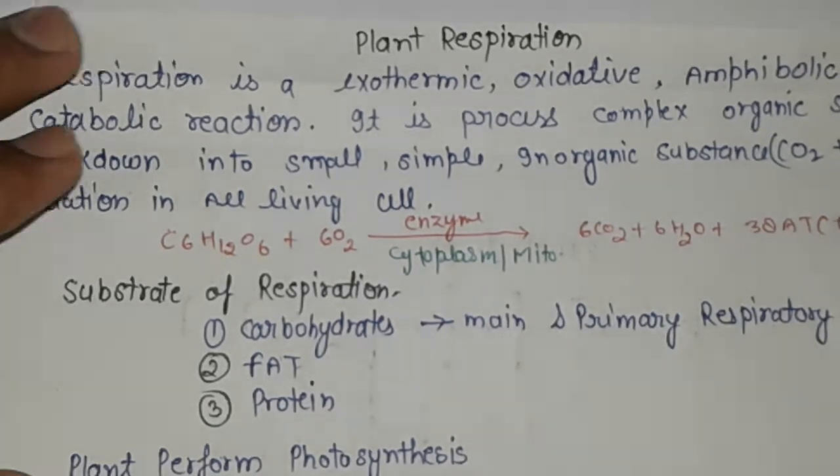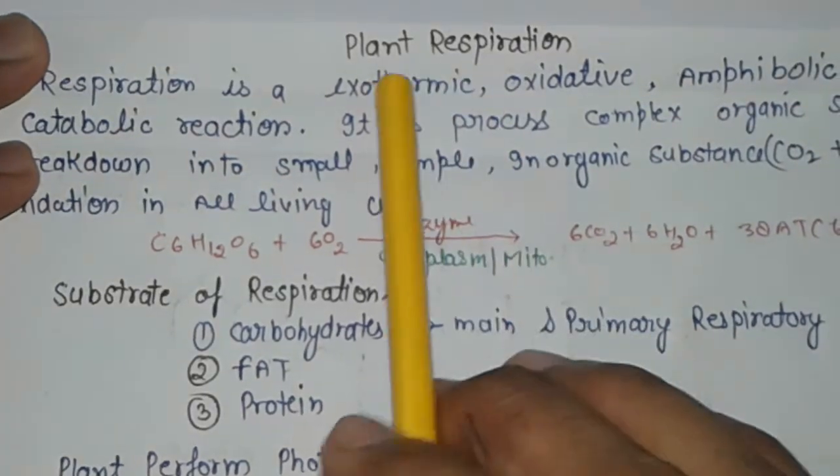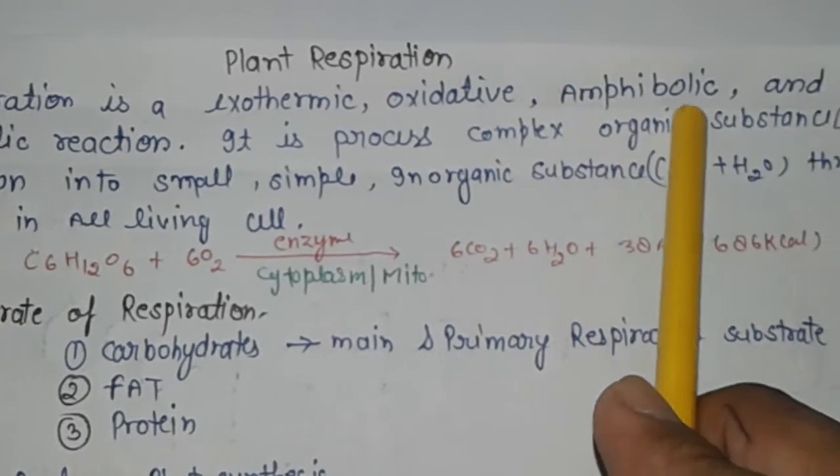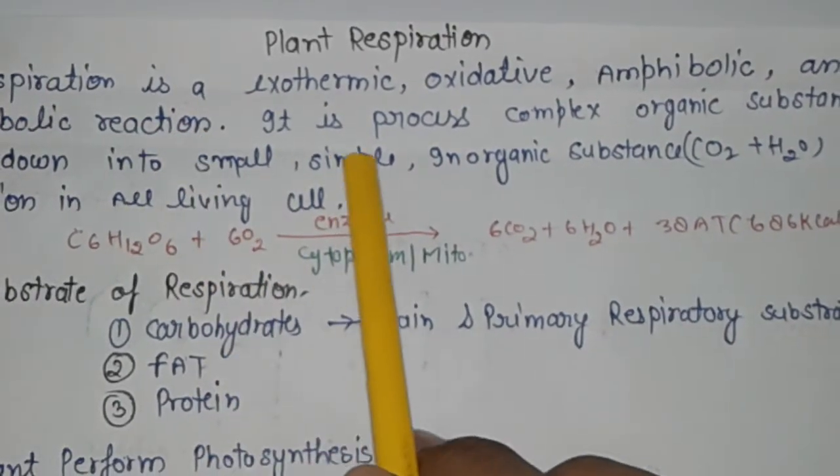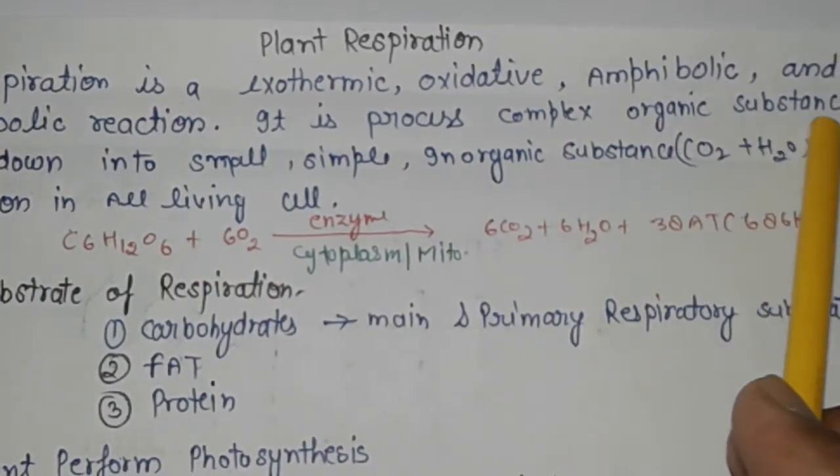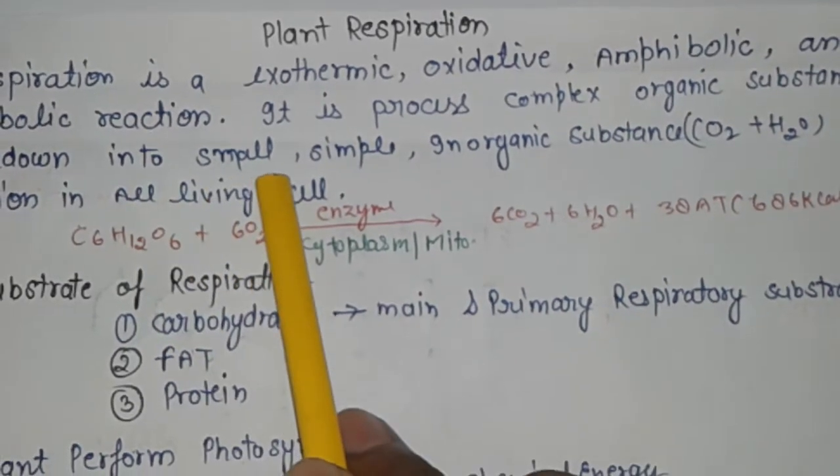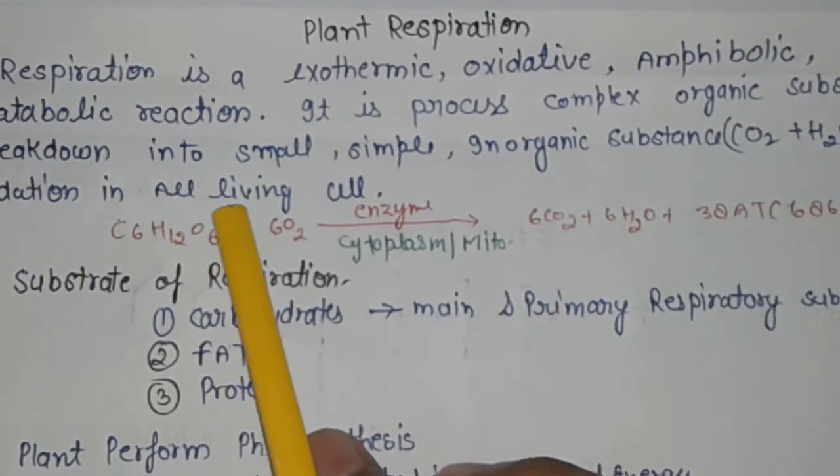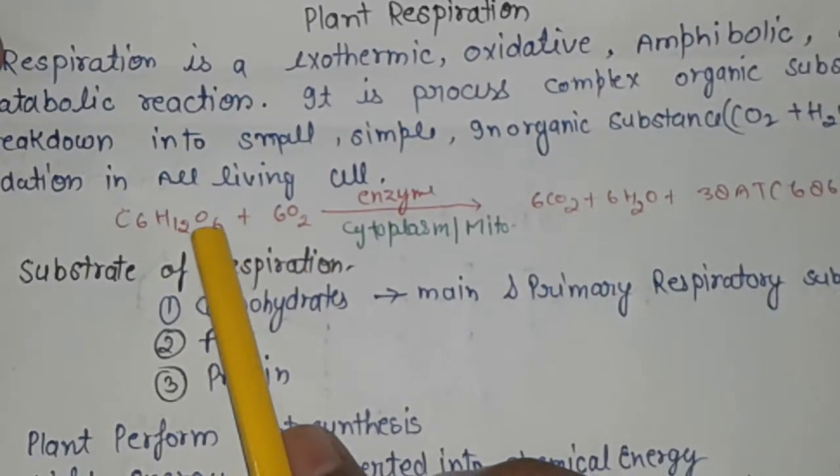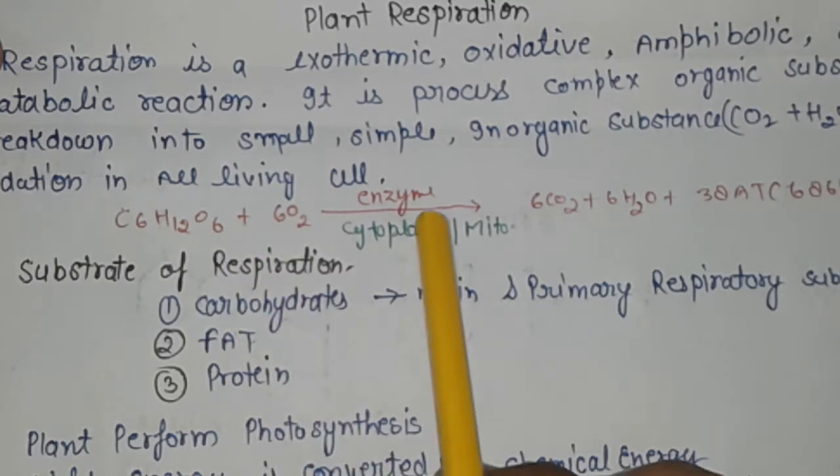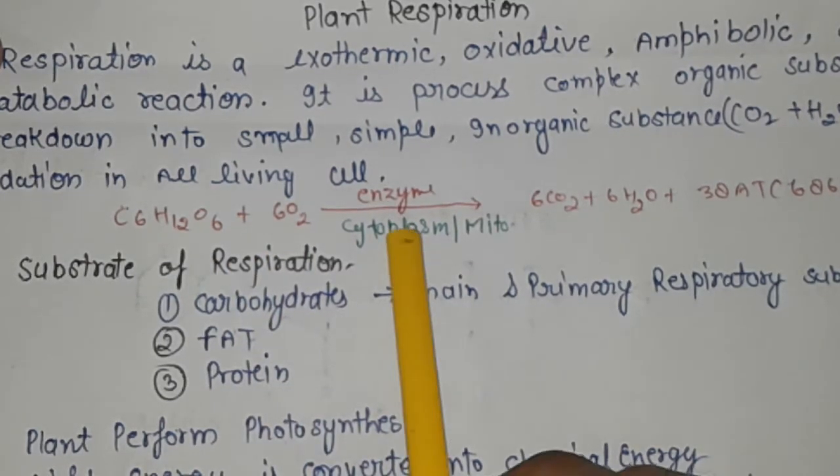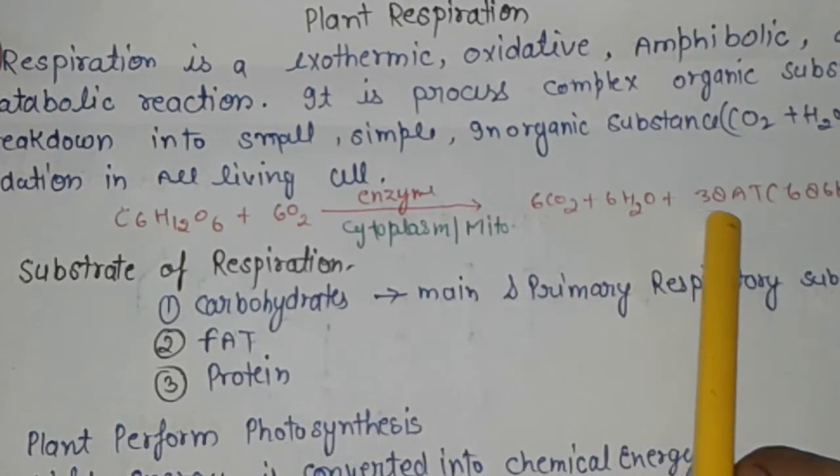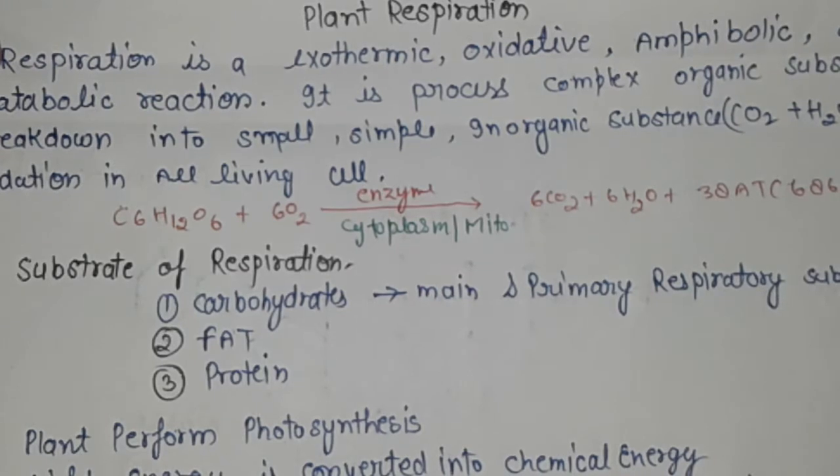Let us discuss plant respiration. Respiration is an exothermic, oxidative, amphibolic and catabolic reaction. It is the process of complex organic substance glucose breakdown into small inorganic substances CO2 plus H2O through oxidation in all living cells. The reaction is C6H12O6 plus O2 in the presence of enzymes present in cytoplasm and mitochondria, producing 6CO2 and 6H2O and 30 ATP molecules and 686 kilocalories.